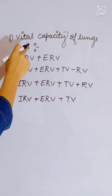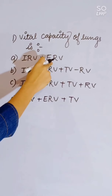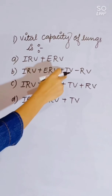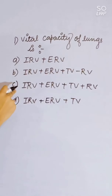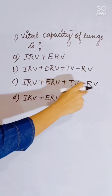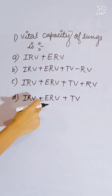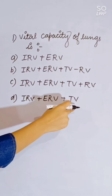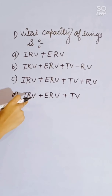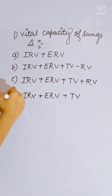Vital capacity of lungs is: IRV plus ERV; IRV, ERV plus TV minus RV; IRV plus ERV plus TV plus RV; or IRV plus ERV plus TV. Vital capacity of the lung is IRV plus ERV plus TV. Correct answer is D.